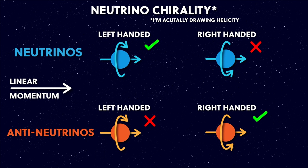Here I've actually drawn the helicity — how the spin aligns with linear momentum — because I don't actually know how to draw chirality. There's a subtle difference between chirality and helicity in any particle with mass; in massless particles, chirality and helicity end up being the same thing. The main point is we don't know why we only get left-handed neutrinos, and it breaks a couple of symmetries in physics called parity symmetry and charge symmetry.